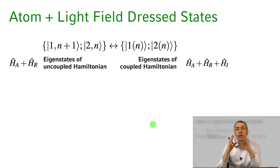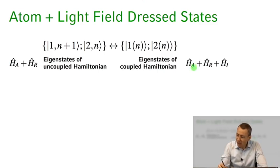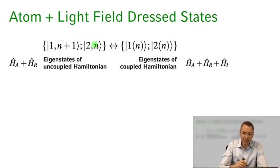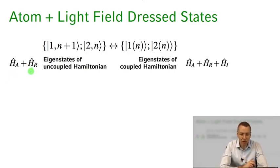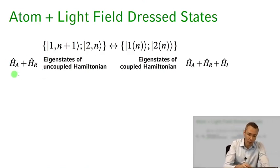Now, if we turn on the interaction Hamiltonian between the atom and the light field and ask what are the new eigenstates of this system — the eigenstates of the atomic Hamiltonian, the radiation field Hamiltonian, and the interaction Hamiltonian — we find they can be formed out of superposition states of these manifold states, the uncoupled basis states we had when discussing just the eigenstates of the atomic Hamiltonian and the radiation field Hamiltonian.